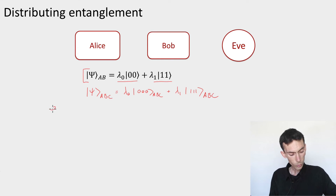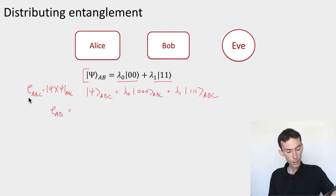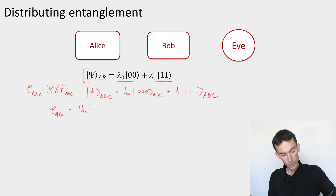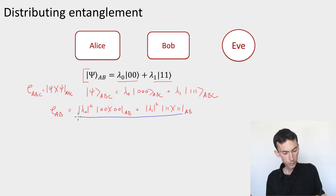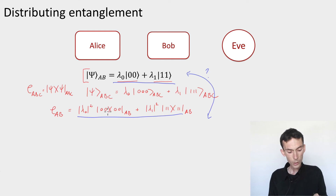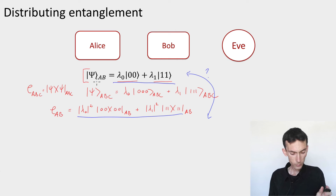Let's compute the reduced density of ψ_ABE on A and B by tracing out E. Measuring E in the computational basis: with probability λ₀², A and B are in state |00⟩, and with probability λ₁², they're in state |11⟩. But this is a separable state — ρ_AB is just a uniform mixture of tensor product states — whereas ψ_AB is entangled whenever the Schmidt rank is larger than one, i.e., unless λ₀ or λ₁ is zero. So the two are not the same; we have not succeeded.